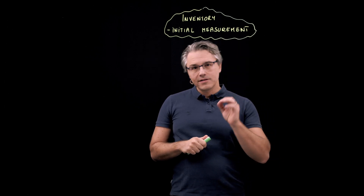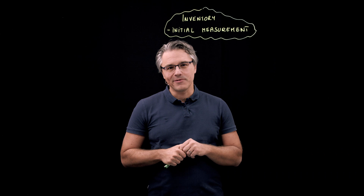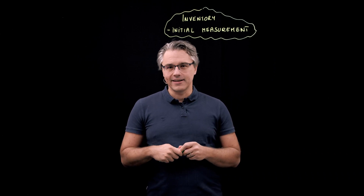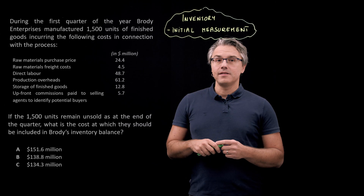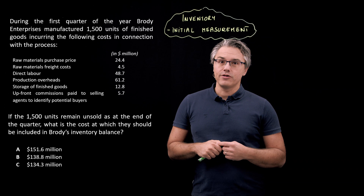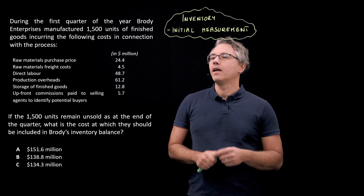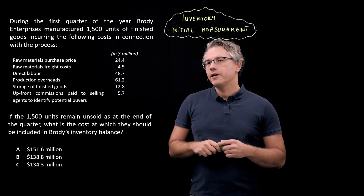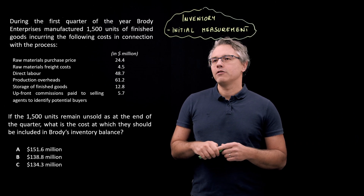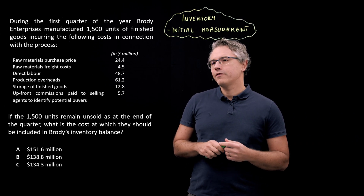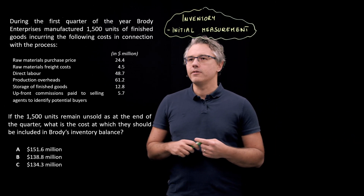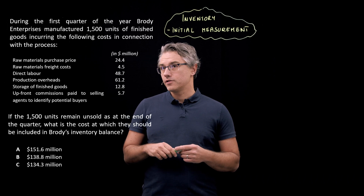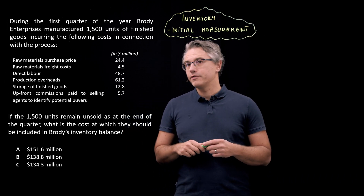So if this is something you want to get right in the exam, do keep watching and let's get solving. So this is the question I want you to have a go at. During the first quarter of the year, Brody Enterprises manufactured 1,500 units of finished goods, incurring the following costs in connection with the process.